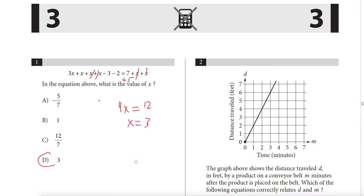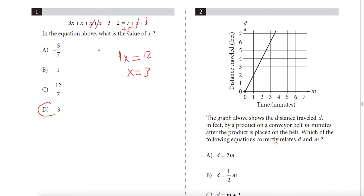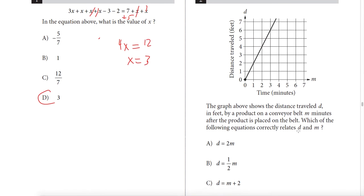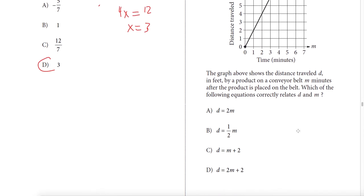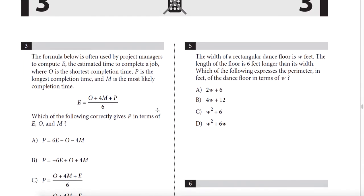Question 2 gives us a graph. It asks which of the following correctly relates D and M. We derive the equation using vertical change divided by horizontal change. The vertical change is 2 over 1, so the slope is 2, giving D = 2m. Answer: A.